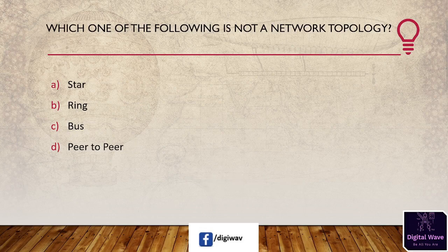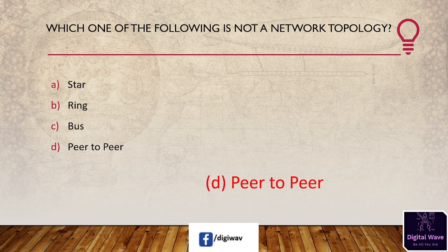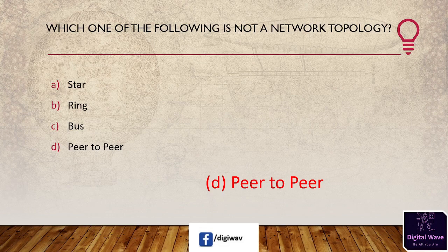Next question: which one of the following is not a network topology? Options are: star, ring, bus, and P2P. The answer is P2P. A P2P network is a network in which all computers use the same resources as other computers. Its network is designed primarily for small local areas.